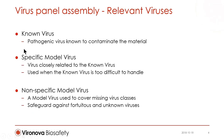The panel of relevant viruses is assembled specifically for each validation study. It should model all viruses that may be present in the raw material. The relevant viruses consist of known viruses, specific model viruses, and non-specific model viruses. The known virus is a pathogenic virus known to contaminate the raw material — for example, HIV in human plasma.